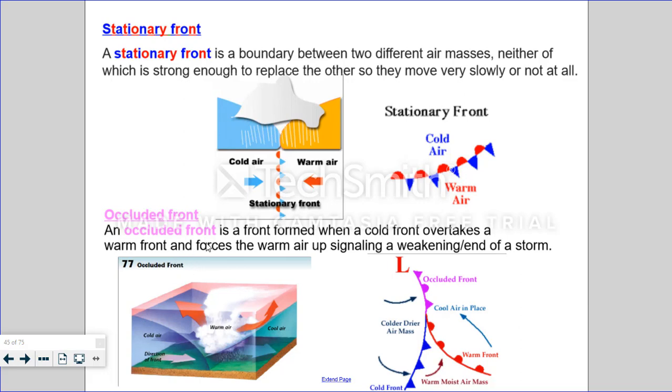An occluded front is a front formed when a cold front overtakes a warm front, and it forces the warm air up. This usually signals the end of a storm. So here's cold air moving in, moving through, and that warm air rises. An occluded front is depicted by showing the warm air moving out of the way, the cold air replacing it, and where they meet, you would see purple dots and triangles instead of your typical red and blue triangles.